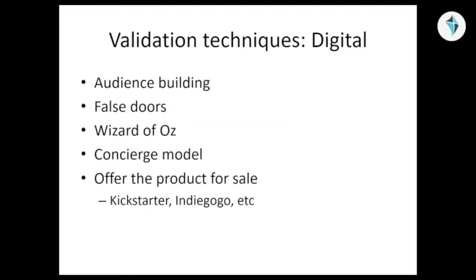False doors: people click on a topic to see if they're interested, and you basically say 'coming in the future,' but you're counting and analyzing how many people are doing those clicks. Wizard of Oz is where you've avoided automation by doing something by hand behind the scenes, and your customers are not aware of it.